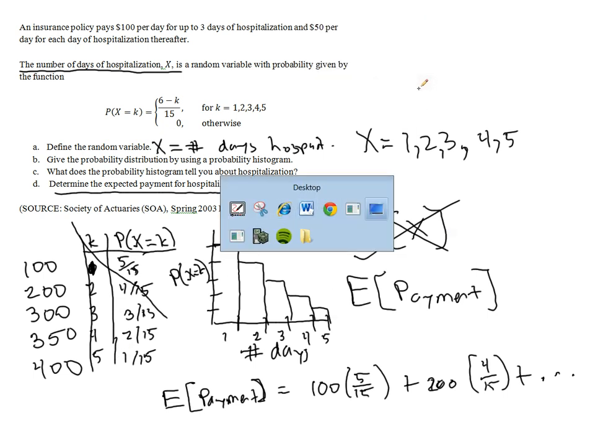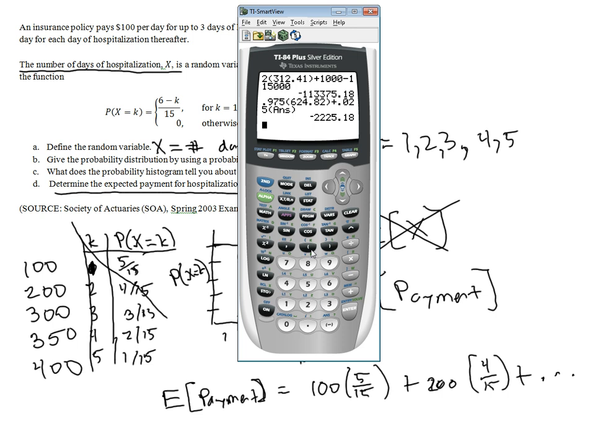So we will have 100 times 5/15 plus 200 times 4/15 plus 300 times 3/15 plus 350 times 2/15 plus 400 times 1/15.